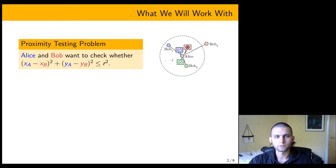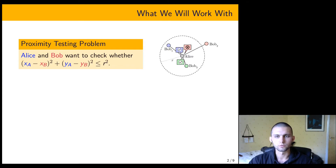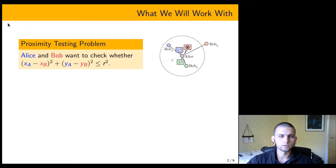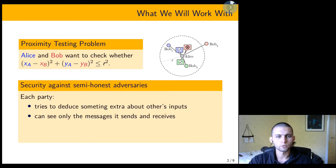In this problem we have two parties, each of whom know their locations on the Euclidean plane, and we want a protocol which would allow these two parties to exchange messages and find out whether they are close enough to one another — meaning whether the Euclidean distance between them is less than a given threshold value. We are interested in secure protocols, and the only kind of security we consider here is security against semi-honest adversaries.